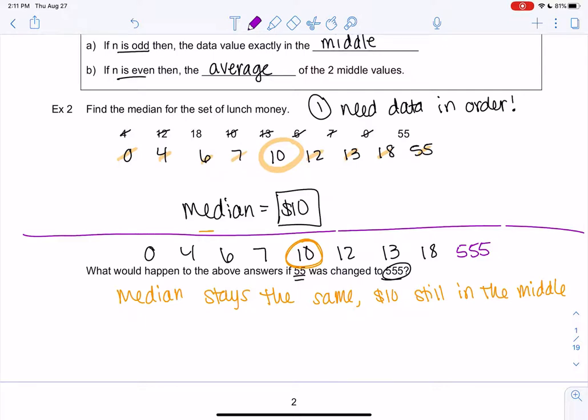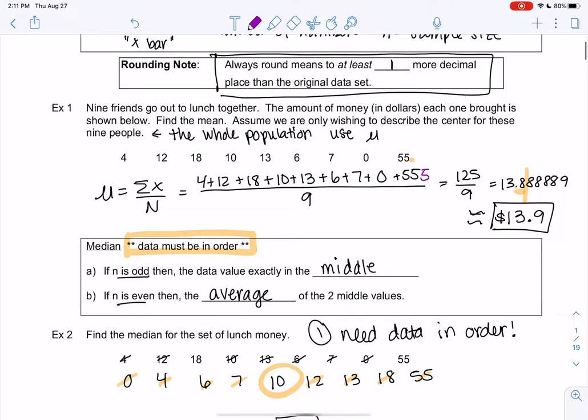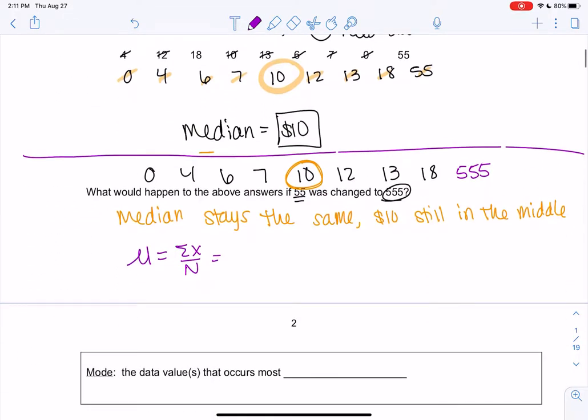And then what happens to the mean? So mu is the sum of the x's over n. So now when I add up all the x's, instead of adding 55, we're adding 555. So that's going to make a huge difference in the total. You don't have to write this out every time. You can just do it on your calculator. The total amount of money is way larger because one friend brought $555. I think you get 625 over nine, which is now way more.